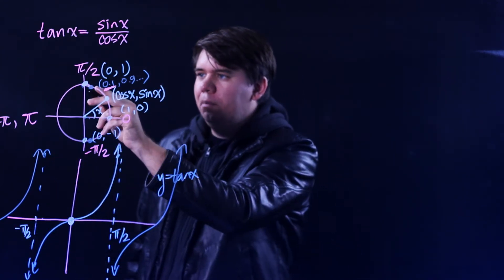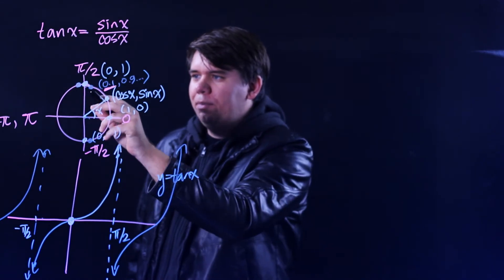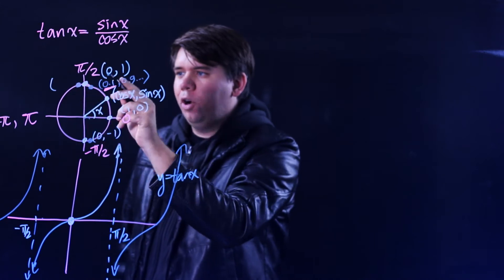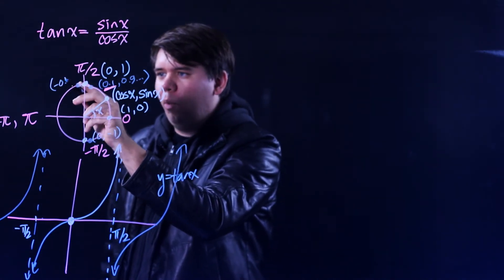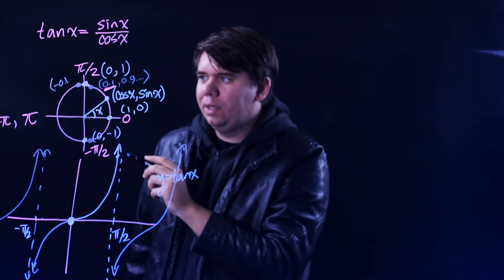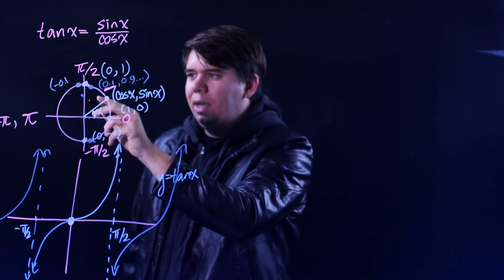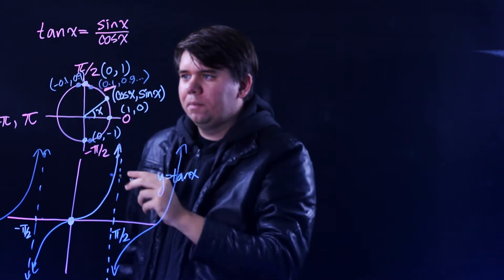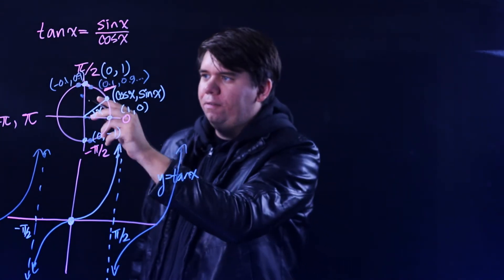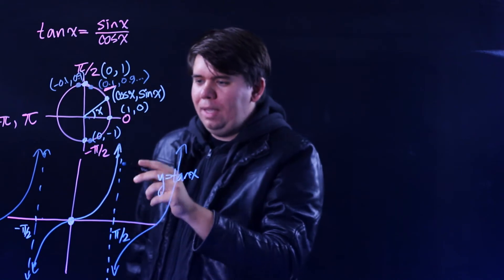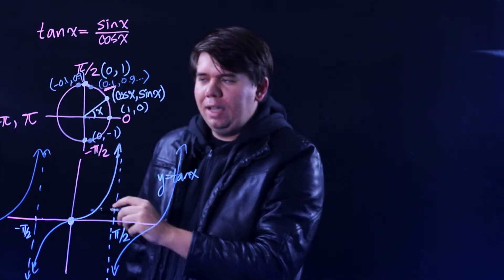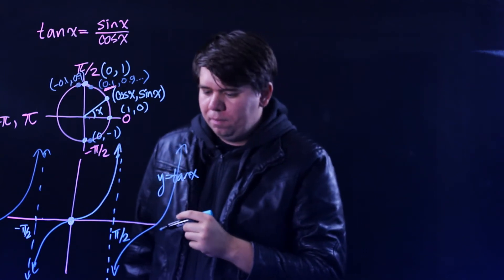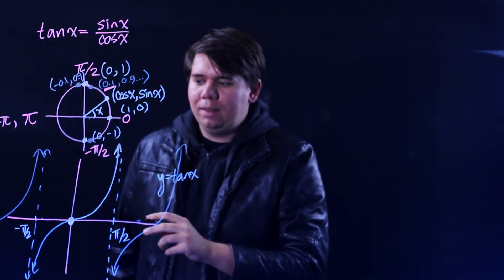If I'm a little bit bigger than π/2, my cosine is now slightly less than zero — maybe negative 0.1 — but my sine is still really close to one, like 0.9. Dividing 0.9 by negative 0.1 gives something like negative 9 — a large negative number. So just past π/2, tangent drops down to a large negative value, and tangent looks something like this.